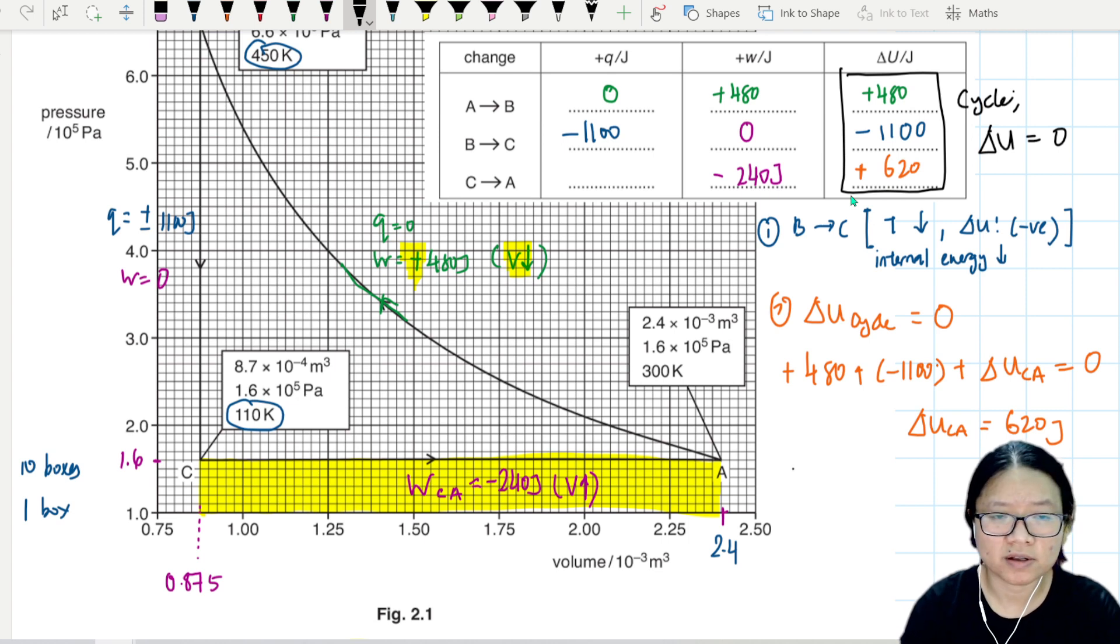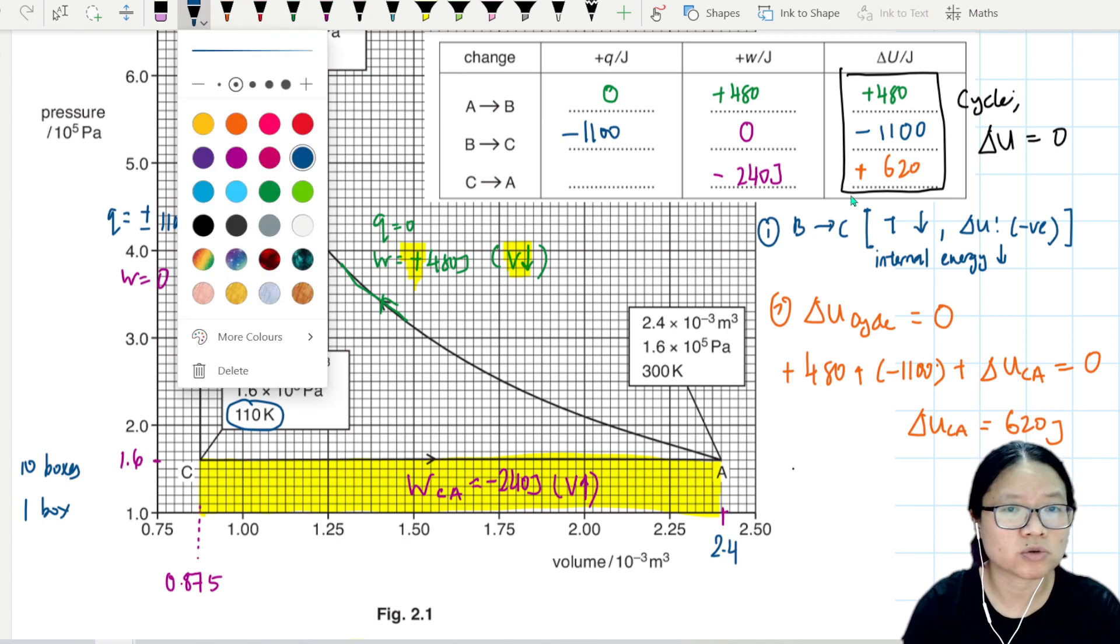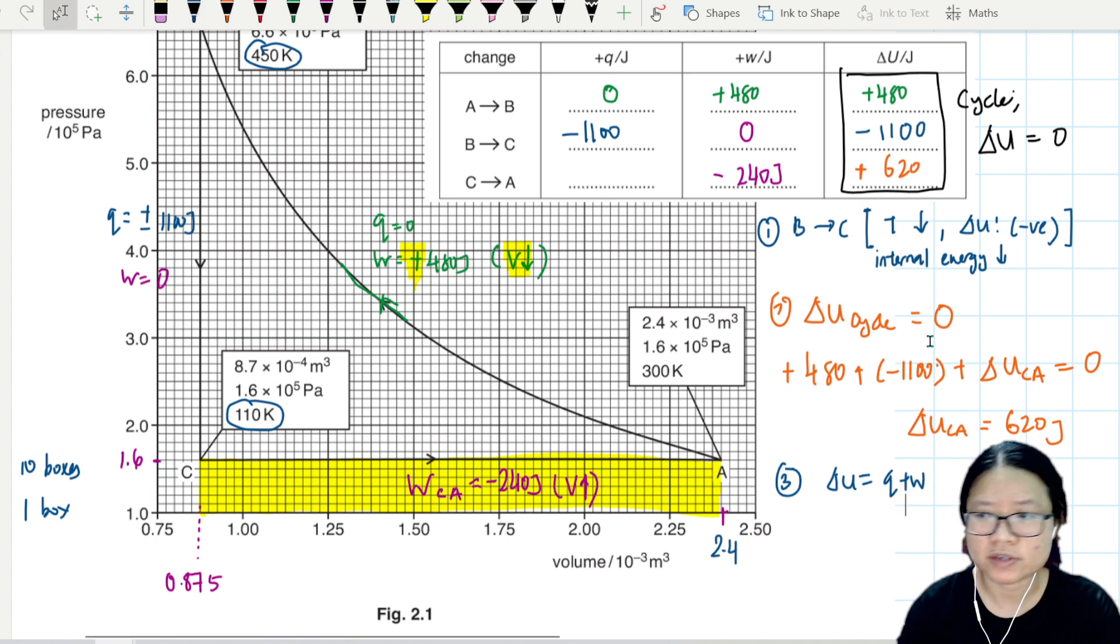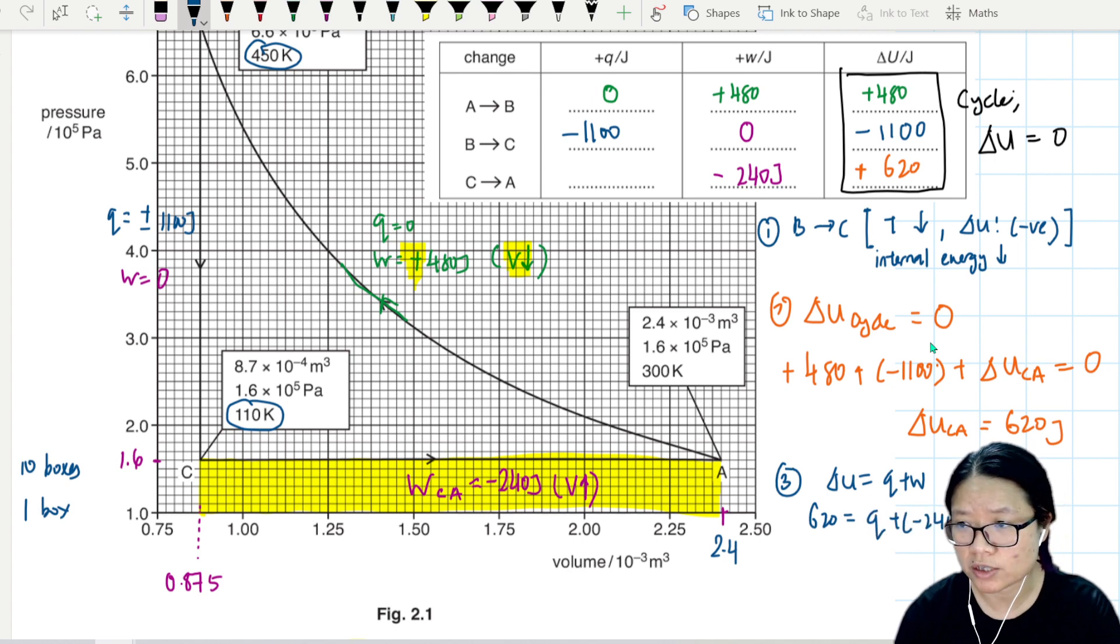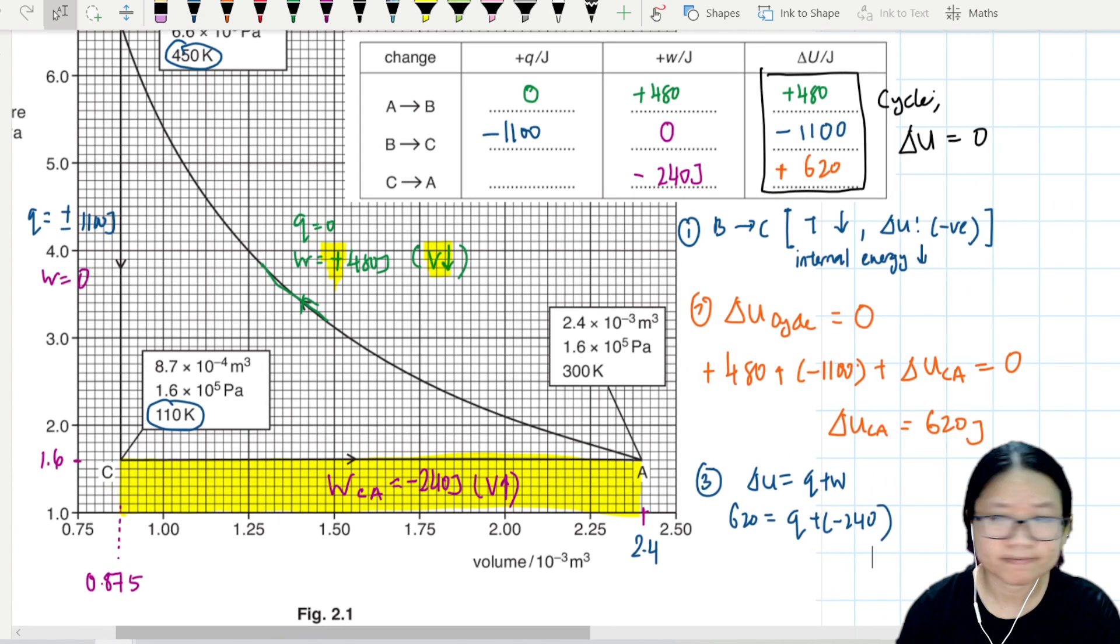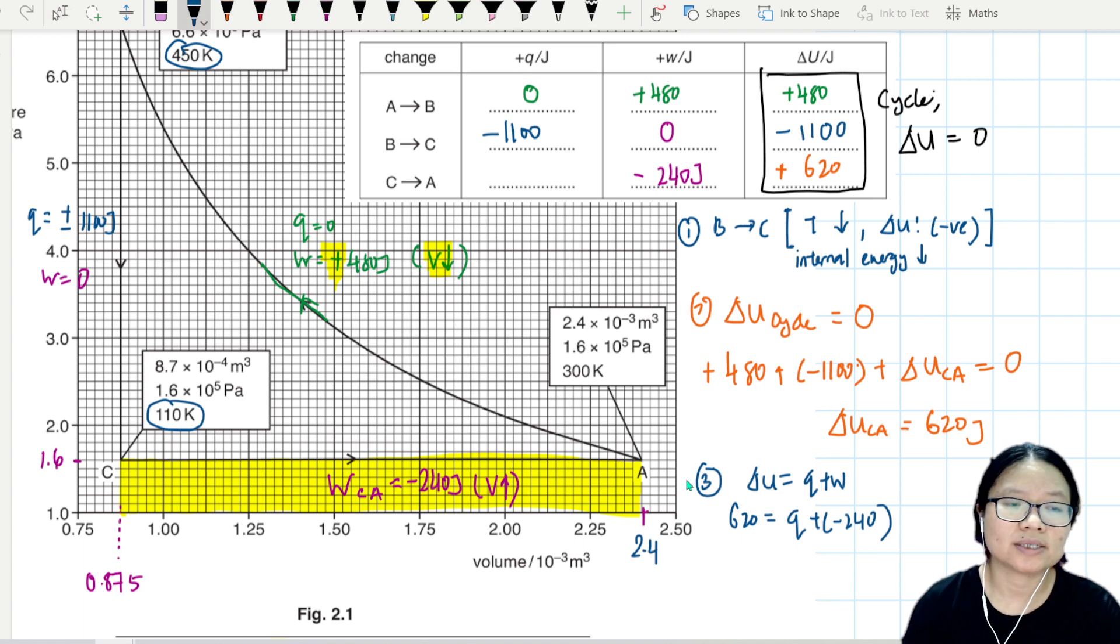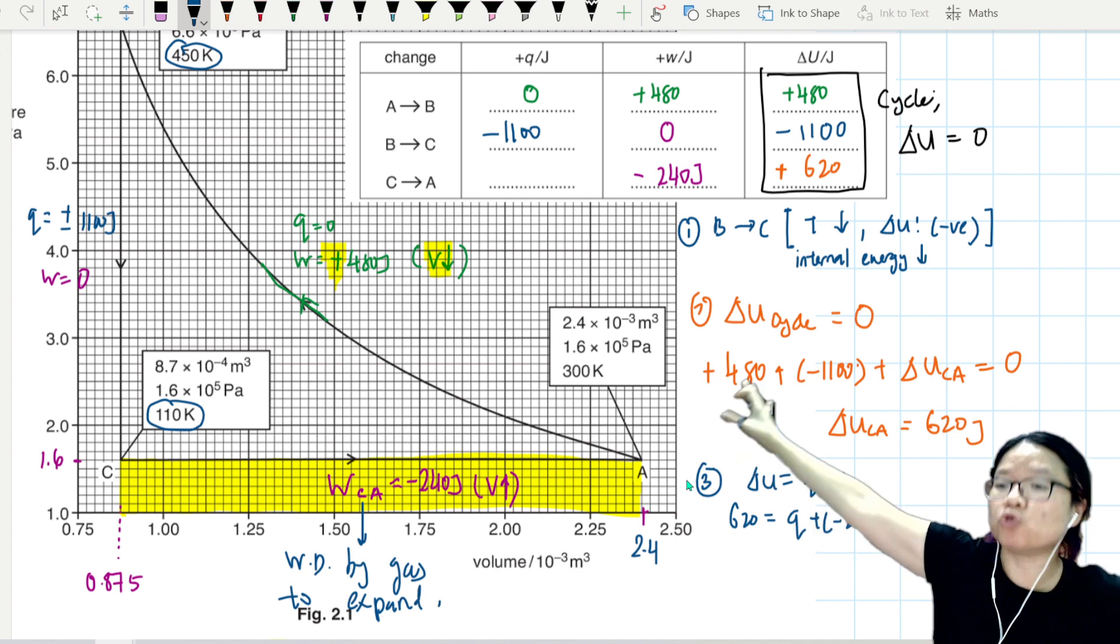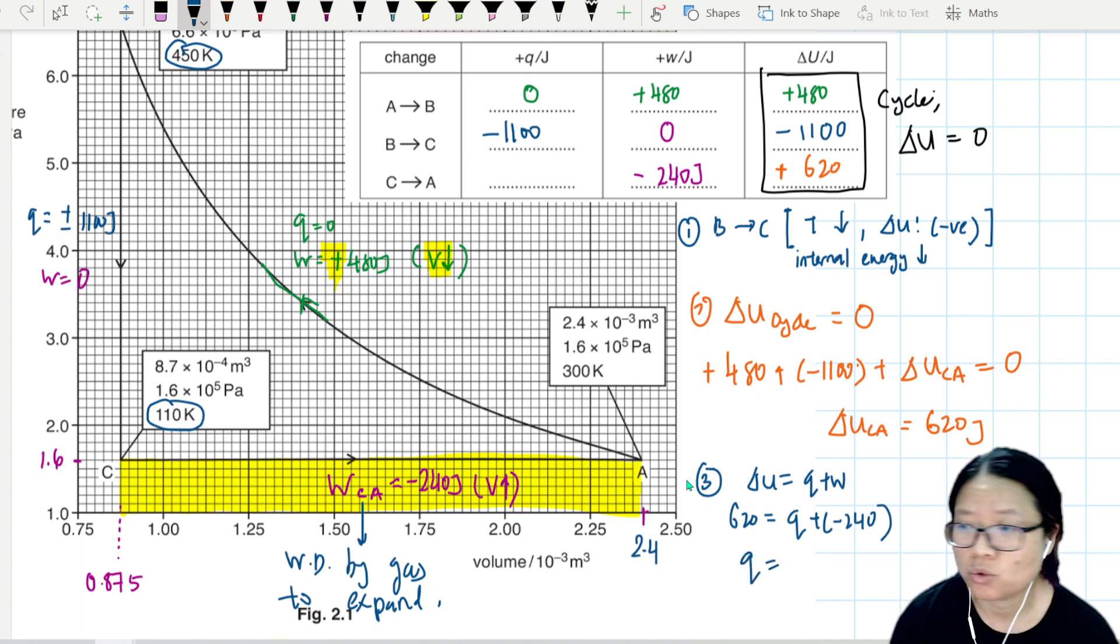And finally part three, I guess, I don't know what color. I'm always forgot. We can use delta U is q plus w for the cycle C to A. So my delta U is 620. We're looking for q, and w is negative 240. This is from C to A. We know that the work done is negative because volume increased. Work done by the gas, work done by gas to expand. When you do work, you push out, you lose energy, negative.